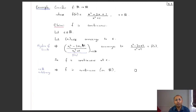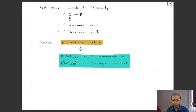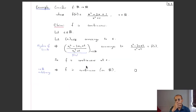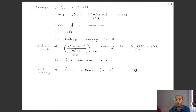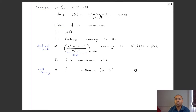Now let's look at one more example — a fairly complicated function — and show it is continuous everywhere using the sequential theorem. This will also motivate the algebra of continuous functions theorem. The function f: ℝ → ℝ is defined by f(x) = (x² − 3x + 1)/(x² + 1), a ratio of two polynomials. Is this well-defined? Yes: x² ≥ 0 so x² + 1 ≥ 1 > 0, making the denominator always positive and nonzero.